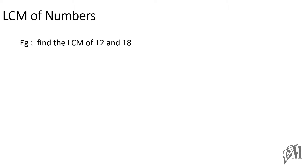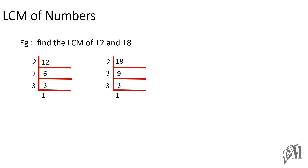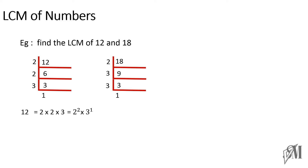Find the LCM of 12 and 18. First we find the prime factors of 12 and the prime factors of 18, then we write the prime factors as products and finally as powers of products of prime factors. Once we write the powers, 12 equals 2 squared into 3, while 18 equals 2 to the power 1 into 3 squared.